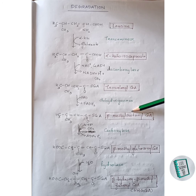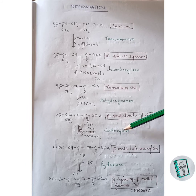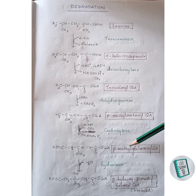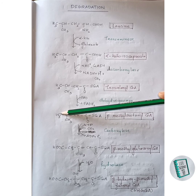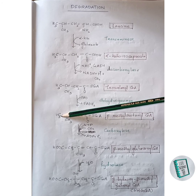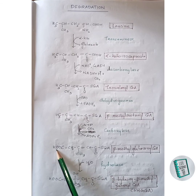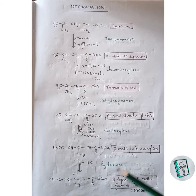Beta-methylcrotonyl-CoA undergoes carboxylation in the presence of carboxylase enzyme and ATP: CO2 is added to a carbon, and one hydrogen of the CH3 group attaches to that CO2 to form a COOH group, yielding beta-methylglutaconyl-CoA.